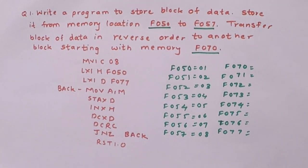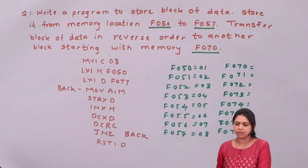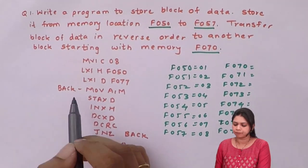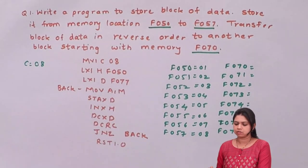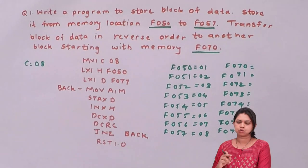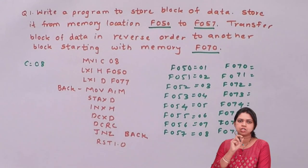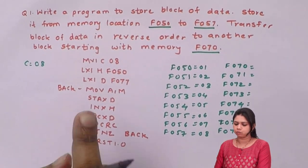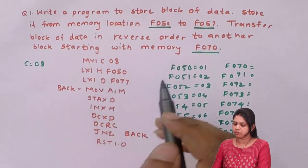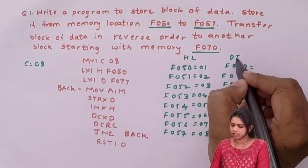So let us start with the program. The first instruction is MVI C, 08. How many numbers do we have? 8 numbers. So my counter will be 8 and that counter is stored in register C, so C equals 08. Next is LXI H, F050. To store a data address like F050, which is 2 bytes, I need a register pair. So I have taken the HL pair for F050 and the DE pair for F077.